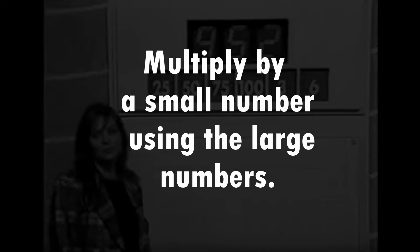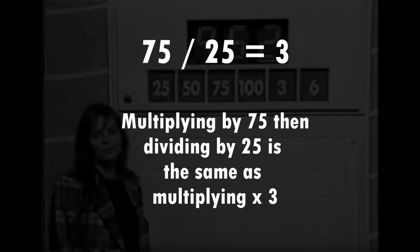So I'll explain that in a little bit more detail. Now we know, for example, that 75 divided by 25 is 3. So if you take any number and you multiply that number by 75 and then immediately divide it by 25, that's the same as multiplying your original number by 3 in the first place.